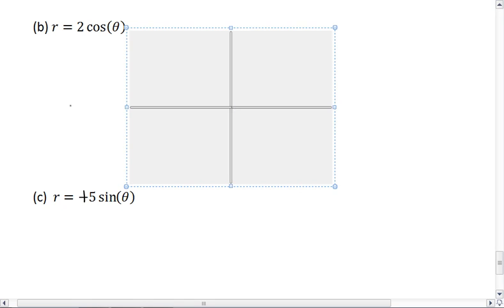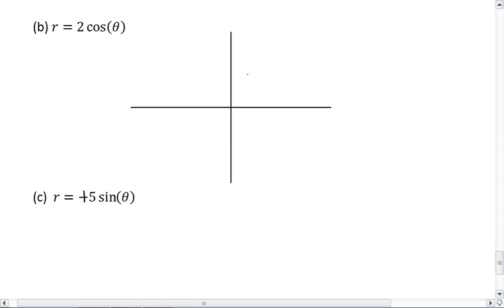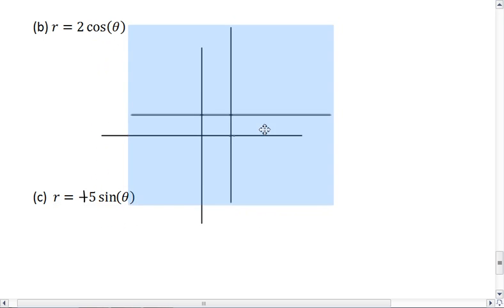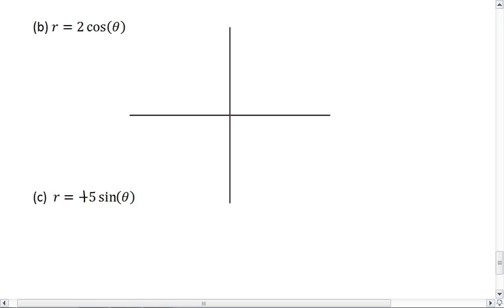The cool thing about this is if it's cosine, your circle is either going to be to the left or the right of the origin, because cosine is a horizontal distance. If the 2 is positive, it means we're going from 0 to positive 2.